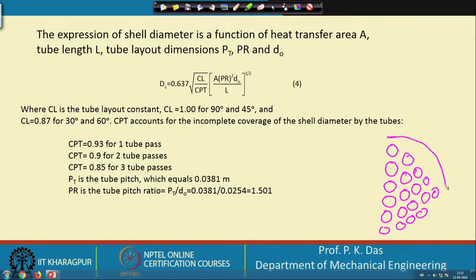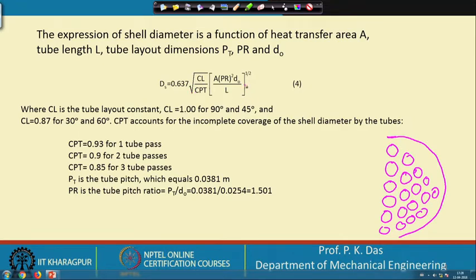The shell diameter has to be large enough to encompass all the tubes. One has to first identify what the tube layout will be, and then based on the tube layout select the shell diameter. Some clearance has to be kept, and there are certain recommendations depending on the outer diameter of the tube plus the tube pitch. There is a somewhat empirical formula with which the shell diameter can be calculated.